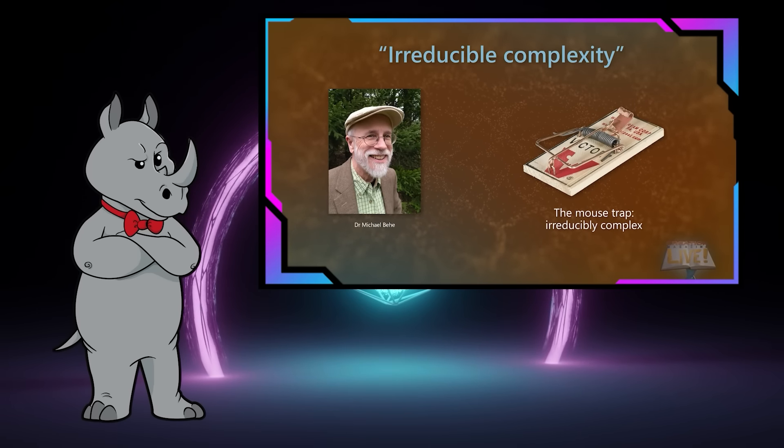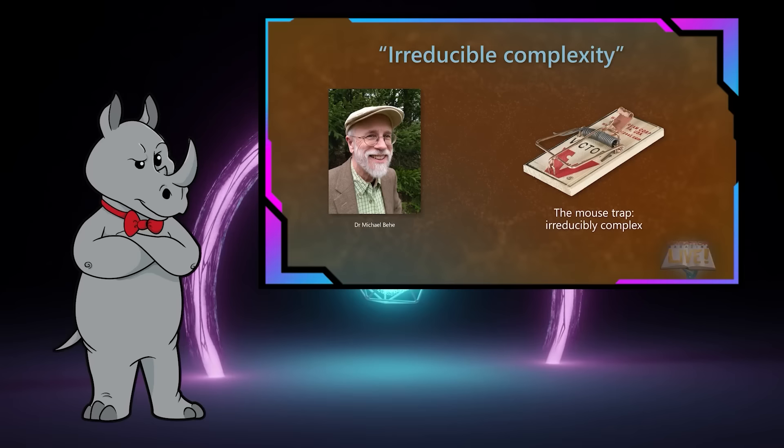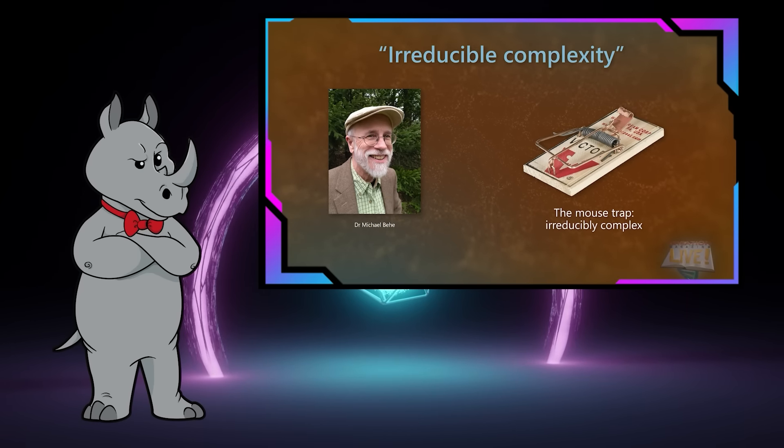Biochemist Michael Behe coined the term 'irreducible complexity,' which refers to a system of interacting parts in which every part has to be in place before it can function. This means a system couldn't come into being gradually bit by bit. And there are many examples of this kind supposedly refuting design in molecular biology — there just aren't any that don't require you to ignore most of the literature on their evolutionary development.